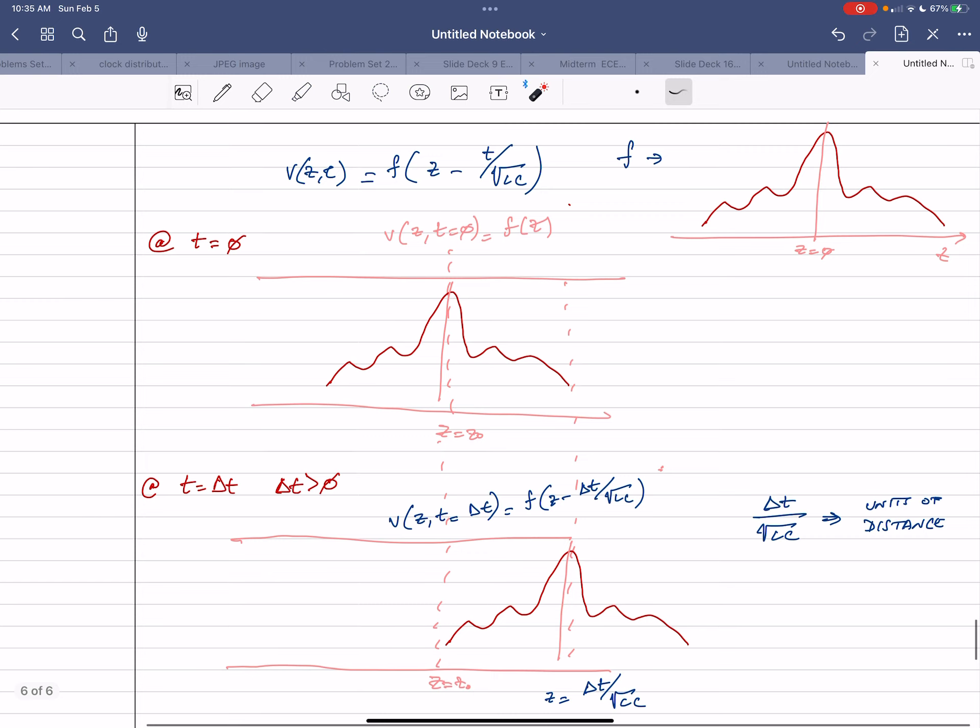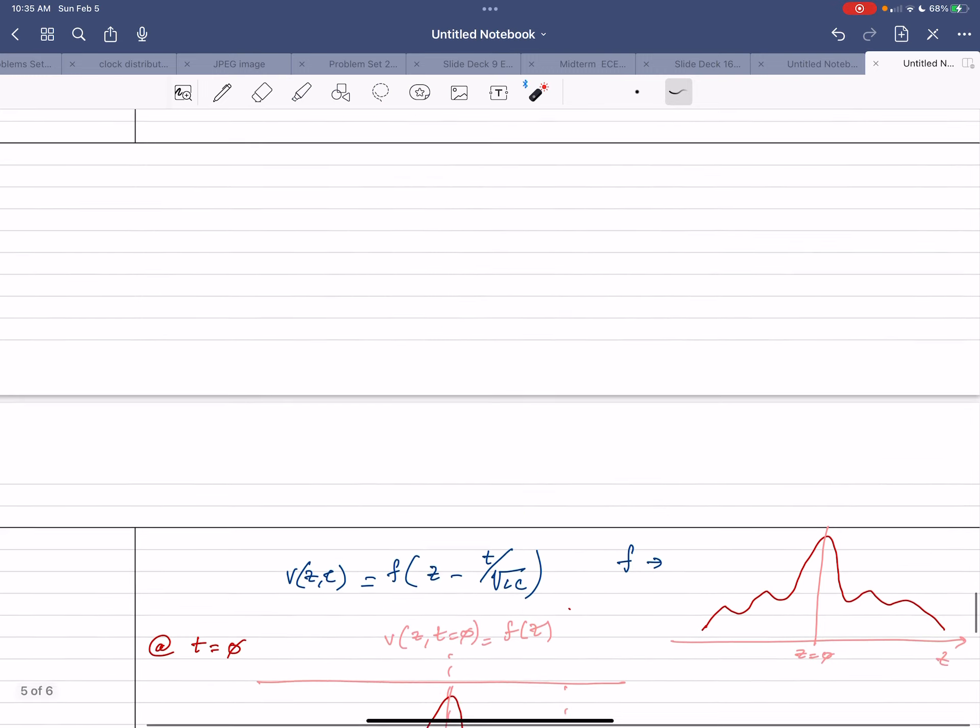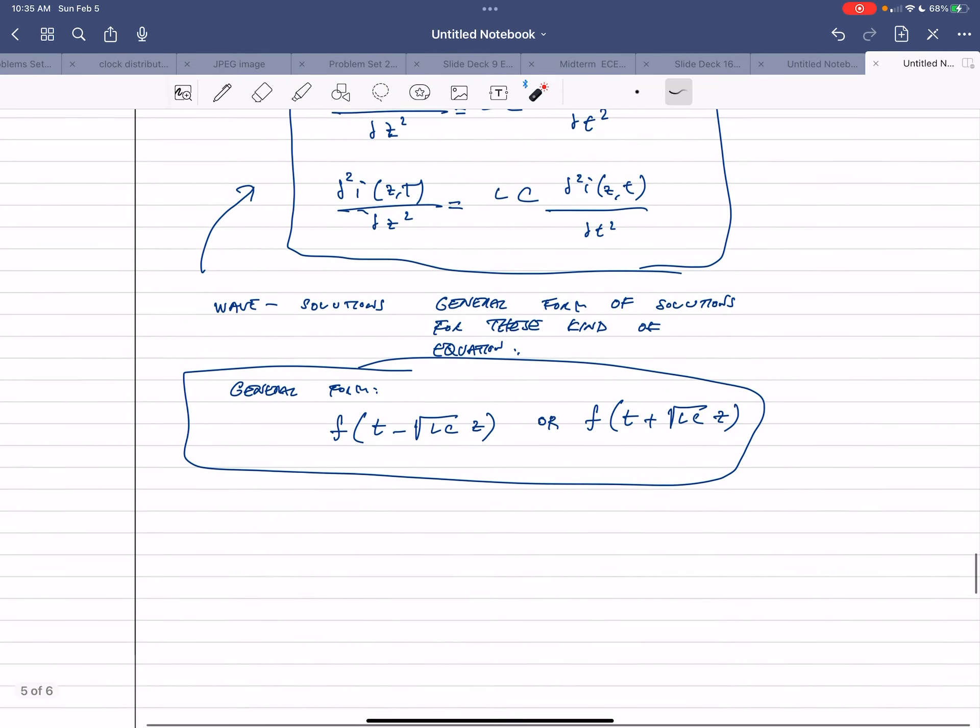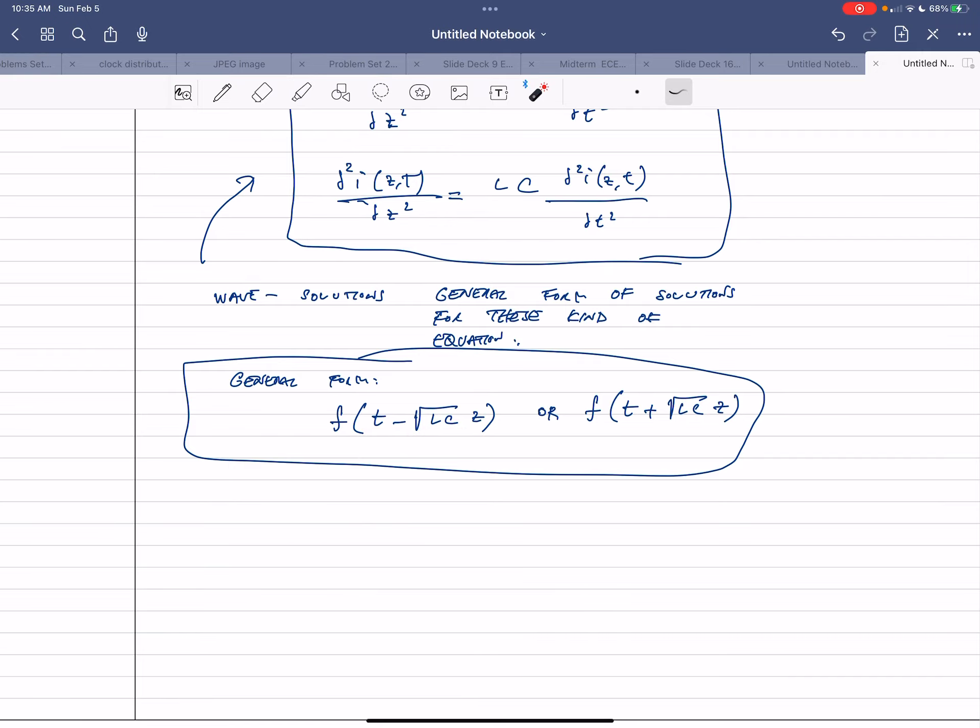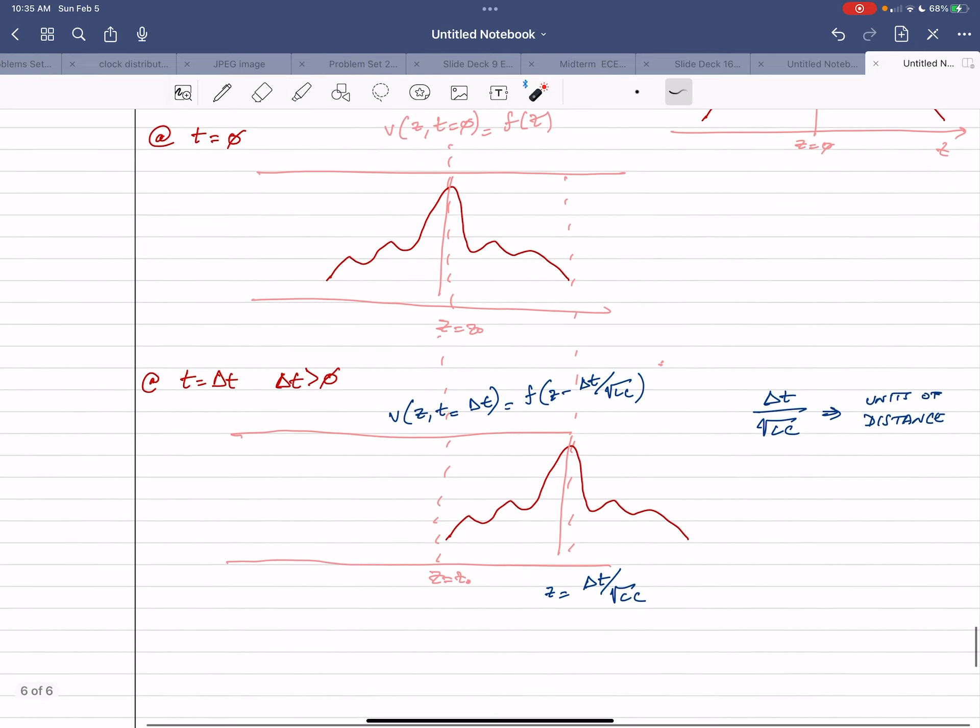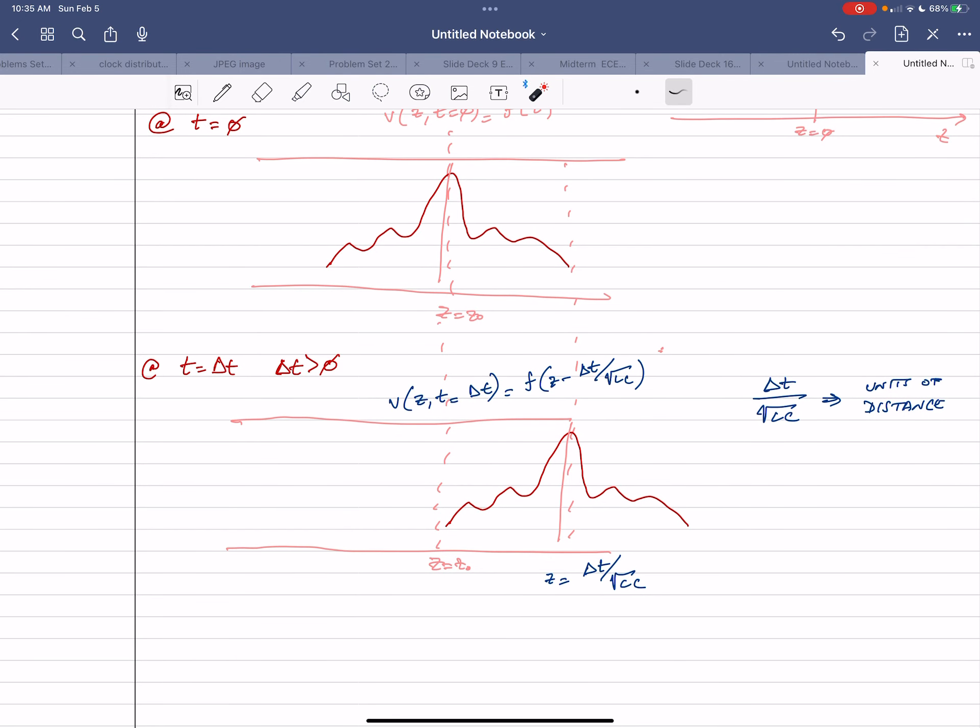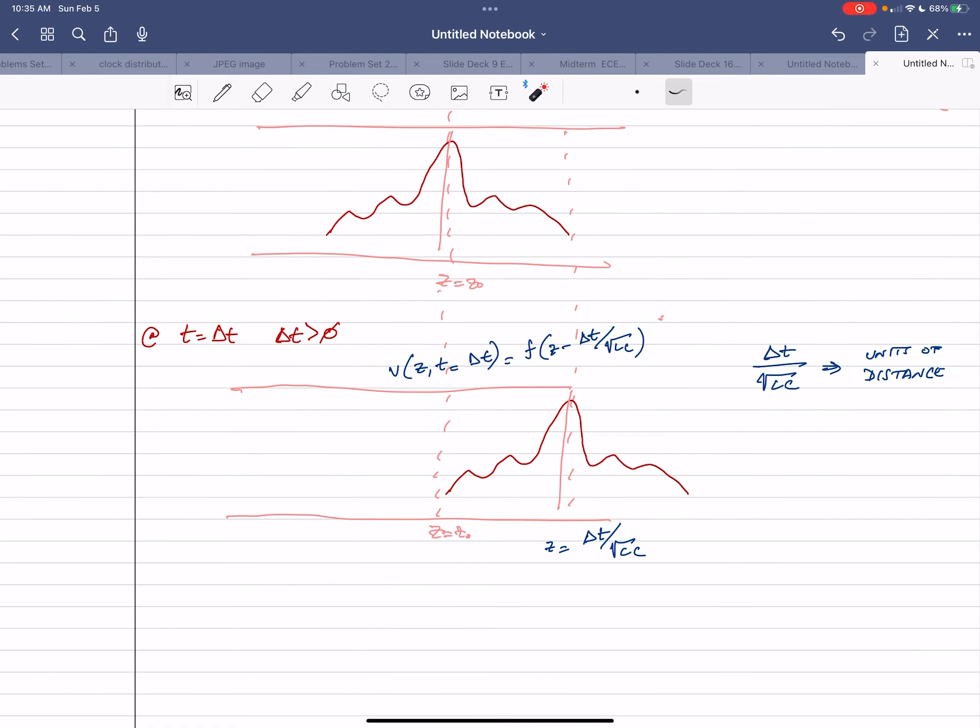So basically we have, if we have any kind of function with this on the inside of the function, this kind of general form where we have a relationship between z and t, the constant could be on the z side, it could be on the t side, it could be on both, but when you have such a thing, what it represents is a waveform that's moving along. So you're representing a change. This waveform, this function is as a function of time, it's going to change its location without changing its form. So that's the general meaning of this wave equation.